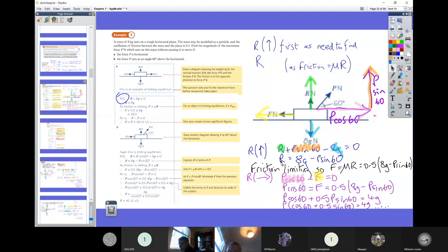That allows us to work out what R is in terms of P. Then we can say, well, we know that because this question tells us we're on the point of moving—it's limiting—we can say that F equals mu times R. Mu, the question tells us, is 0.5, and we've just worked out what the normal reaction is in terms of P.